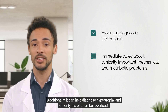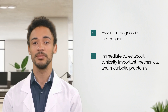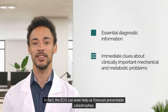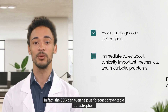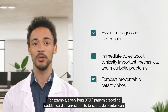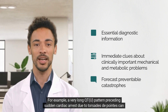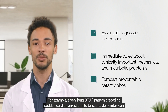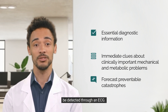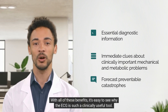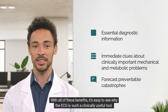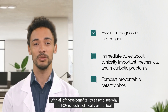Additionally, the ECG can help diagnose hypertrophy and other types of chamber overload. In fact, the ECG can even help us forecast preventable catastrophes. For example, a very long QT-U pattern preceding sudden cardiac arrest due to torsades de pointes can be detected through an ECG. With all of these benefits, it's easy to see why the ECG is such a clinically useful tool.